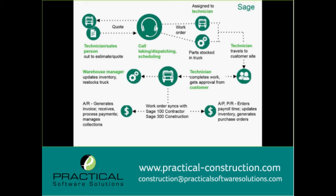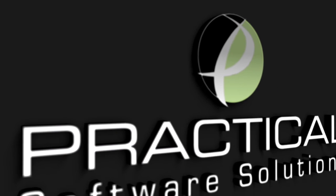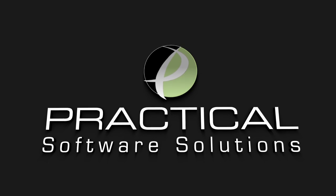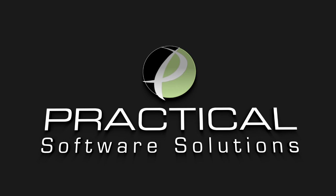That sync with Sage 100 Contractor handles a number of things at once: the technician's time is sent over into daily payroll, purchase orders created for any parts the technician had to buy are automatically sent into 661 purchase orders, and that allows us to generate payments faster and get payroll done quicker. So let's see it in action.